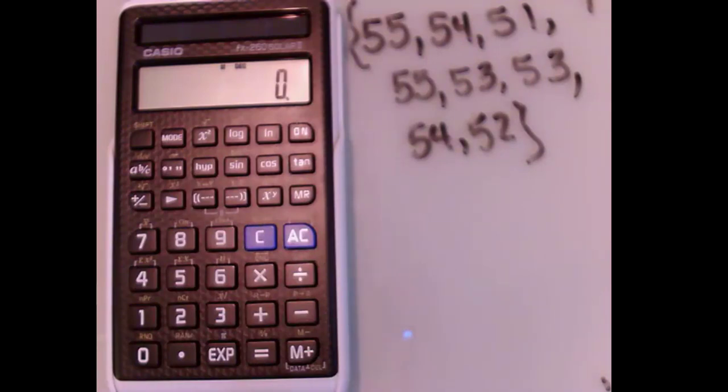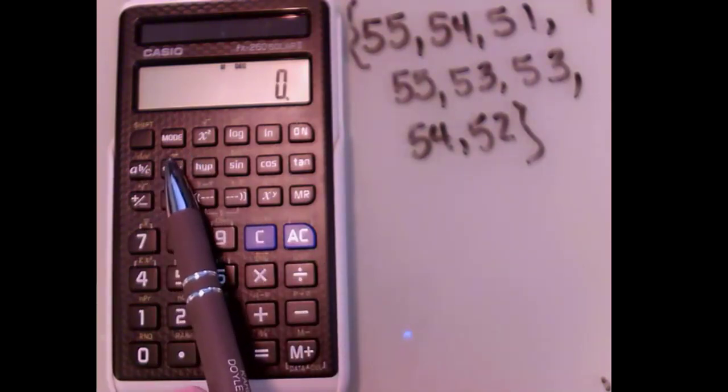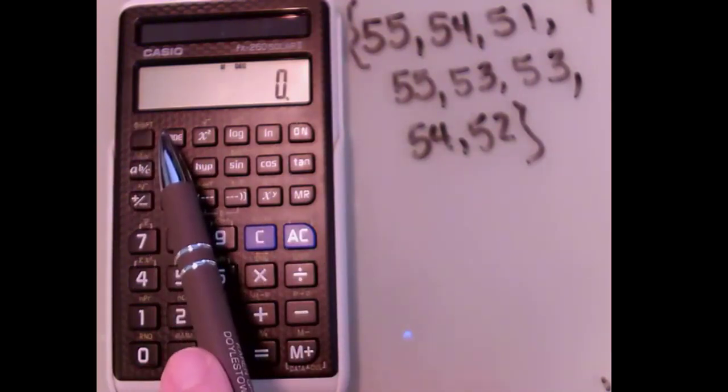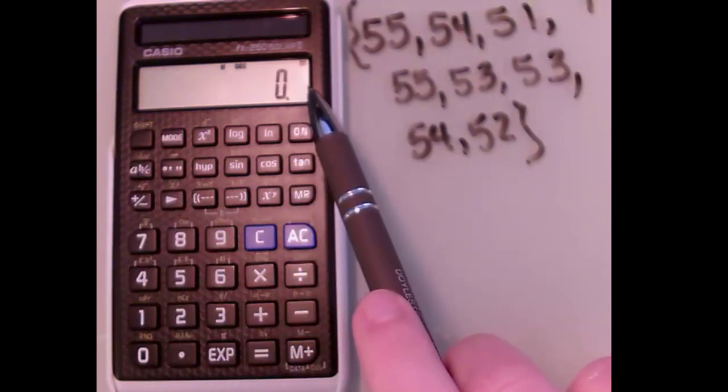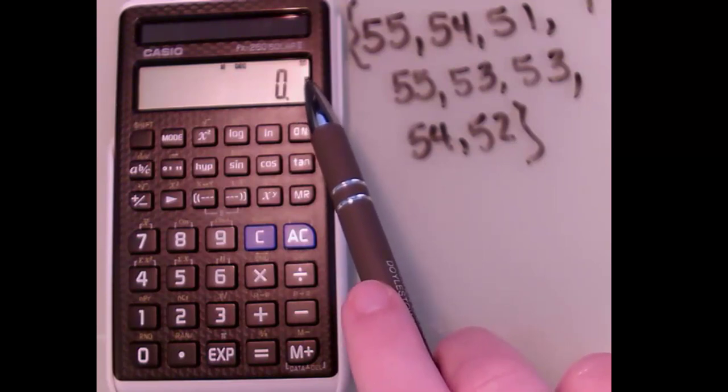First thing I need to do is put it in statistical mode. So you'll notice up here we have mode, and I'm going to hit mode and then the period, and you'll notice right here that that puts me in SD, or statistical data.